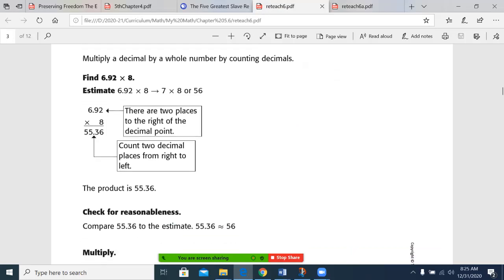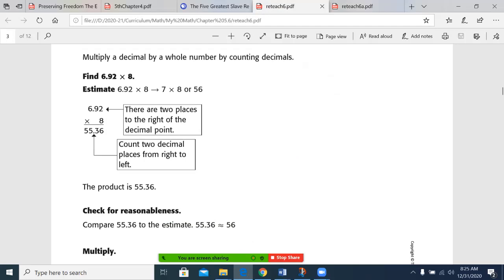And you can see that at the top, it says find 6.92 times 8. And just to check our answers, we know that 6.92 rounds to 7. So our product should be about 56. Product, again, is the word for the answer to a multiplication problem. The numbers we're multiplying are known as factors.